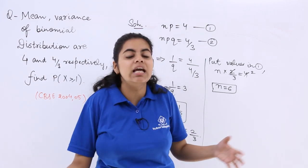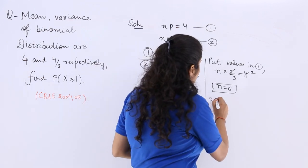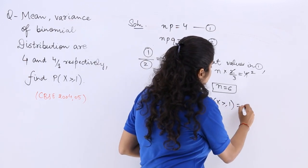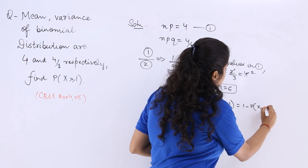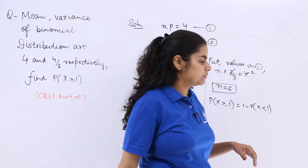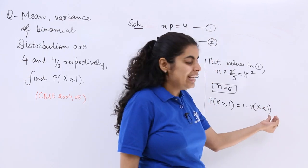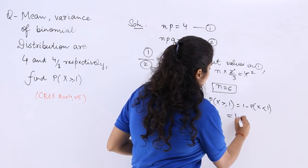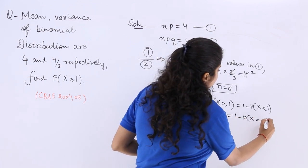So I know that probability X greater than equal to 1 can be written as 1 minus probability X less than 1. Now probability X less than 1 means 1 minus probability X is equal to 0.